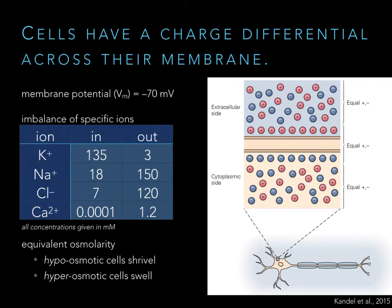The reason cells are biased toward a negative membrane potential has to do with what we call impermeable anions — negatively charged molecules that can't cross the membrane. These would be your phosphates, which are attached to DNA and proteins. The fact that the cell has a lot of phosphate inside biases it toward a negative membrane potential and also explains why we keep calcium levels so low.